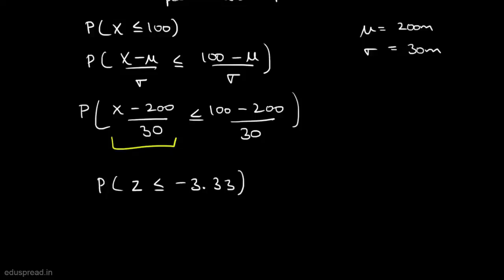By looking at the standard normal table, you can find that the probability that Z is less than or equal to minus 3.33 is equal to 0.0004. So the probability that equipment damage will occur is equal to 0.0004.